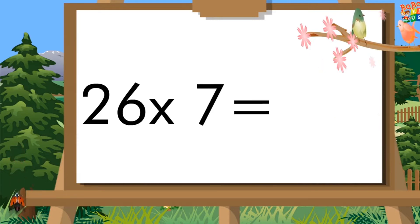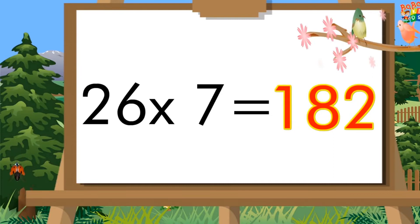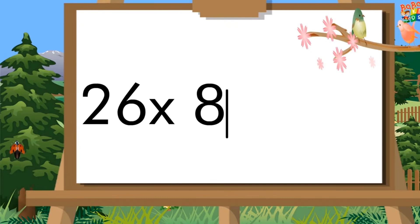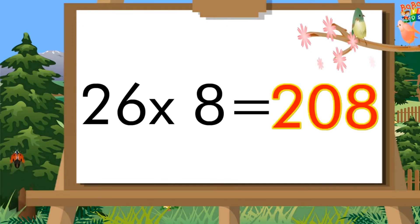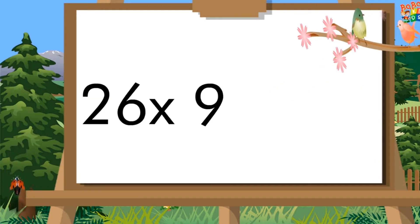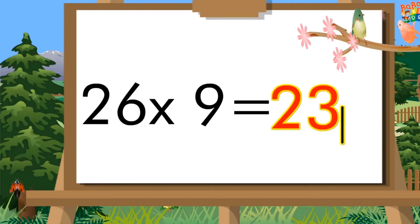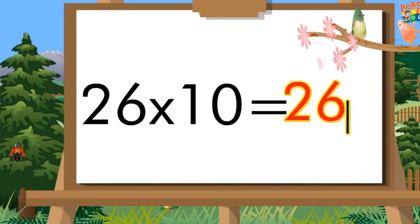26 times 7 is 182. 26 times 8 is 208. 26 times 9 is 234. 26 times 10 is 260.